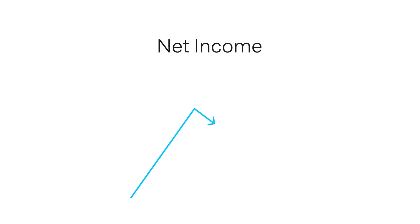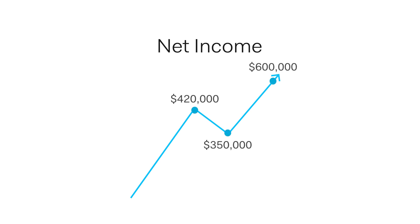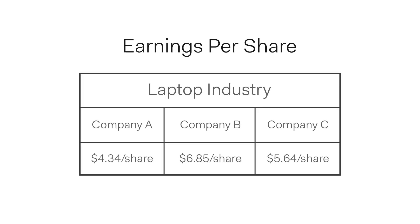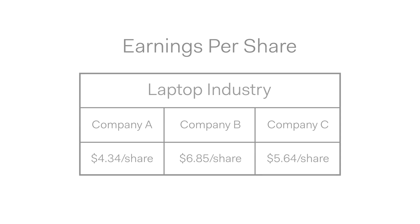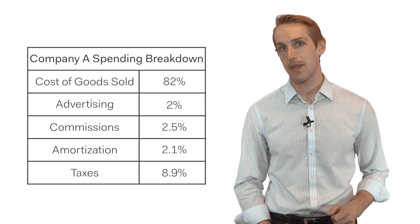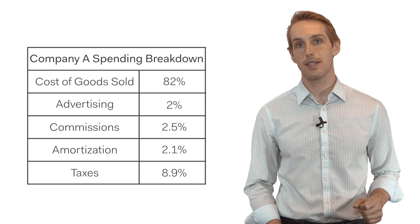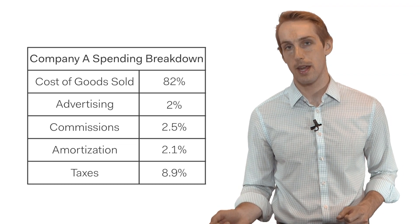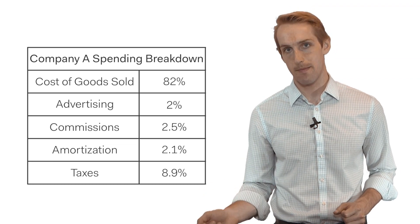So how is the income statement actually used in finance? The total net income of a company is used to evaluate its performance. Investors and analysts will look at profitability and how profit levels have changed over time. In particular, the earnings per share metric is used to compare companies within the same industry. The income statement can also be used to assess where a company is spending its money and how that has changed over time.